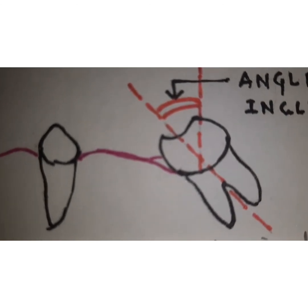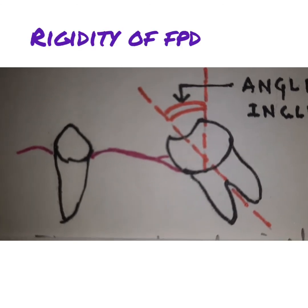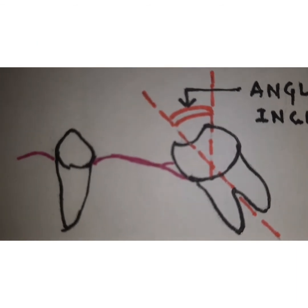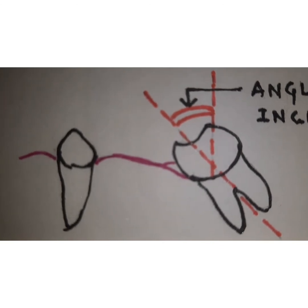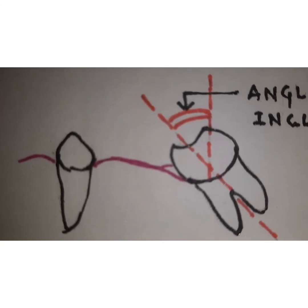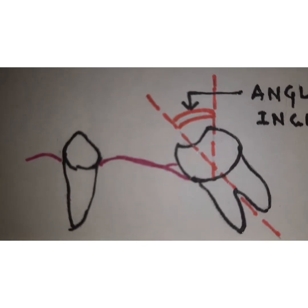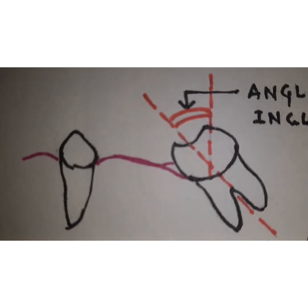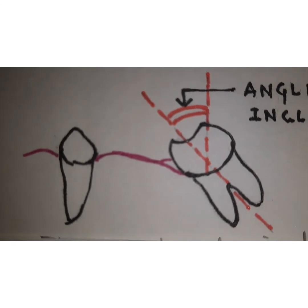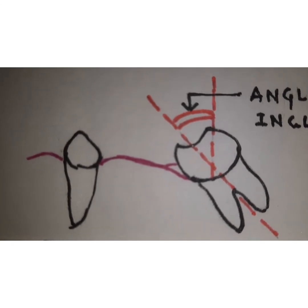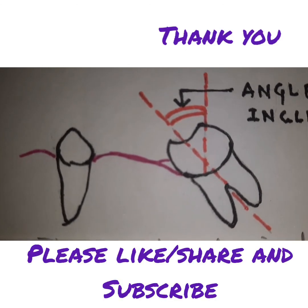Another important factor is the rigidity of the fixed partial denture. When selecting the material, it should be rigid enough to bear functional forces and have adequate thickness to withstand masticatory forces. These are all the factors helpful in selecting abutment teeth in fixed partial dentures. Thank you for watching the video.